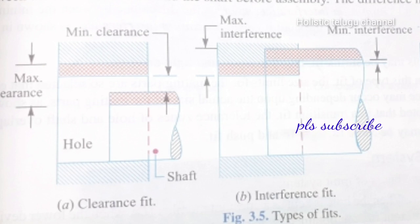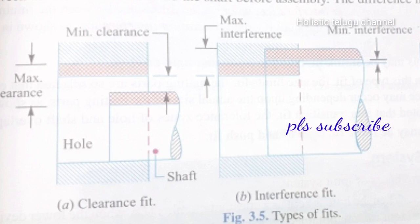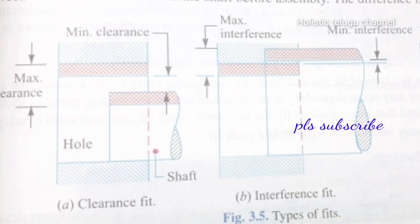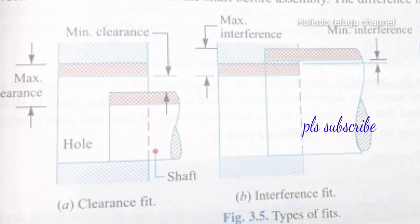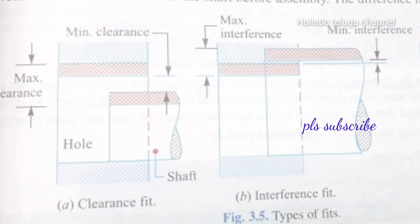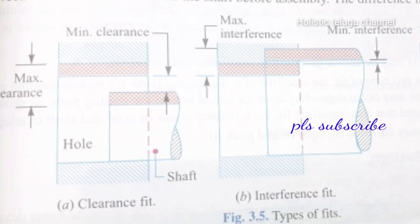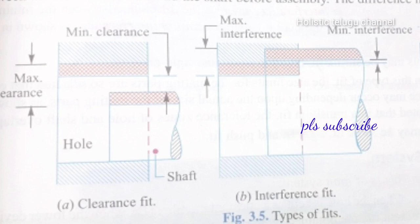The difference between the size of the hole and the shaft before assembly is called clearance. There is positive clearance and negative clearance. The actual size of the shaft is less than the actual size of the mating hole — that is positive clearance. Negative clearance means the actual size of the shaft is larger than the actual size of the hole.